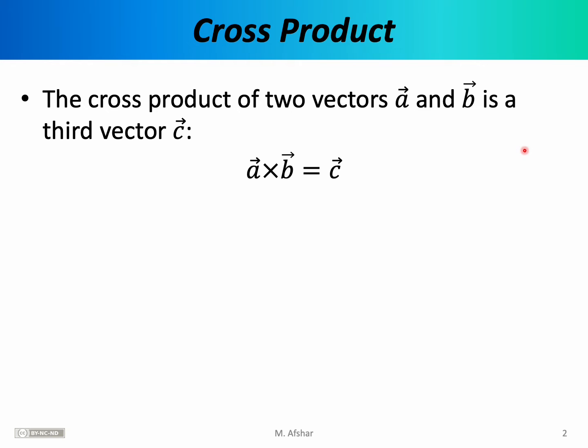In this lecture, we want to discuss a new mathematical operation between vectors. In the past, we've talked about how two vectors can be added, subtracted, and multiplied by a scalar. We've also talked about the dot product, also known as the scalar product of two vectors. Here, we want to introduce a second way in which vectors can be multiplied together — the cross product, or the vector product.